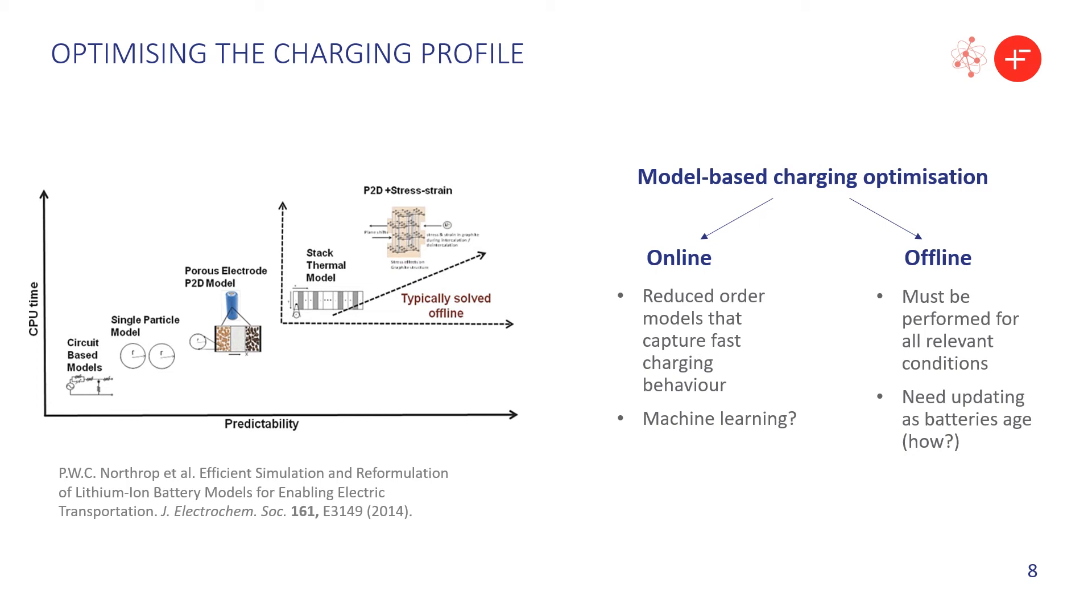Of course, model-based charging optimization is also tricky, since the physics-based battery models that simulate fast charging well are very complex and computationally intensive. Simpler models, such as those based on equivalent circuit networks, do not account for the internal states of the battery and lose accuracy under more extreme use conditions, such as fast charging. So for an application such as onboard charging optimization, we would need to develop reduced order models which solve quickly but still capture all the important physics. Combining modeling with machine learning is another emerging area of interest. Alternatively, charging profiles could be optimized offline with a detailed physics-based model and periodically updated as batteries age.